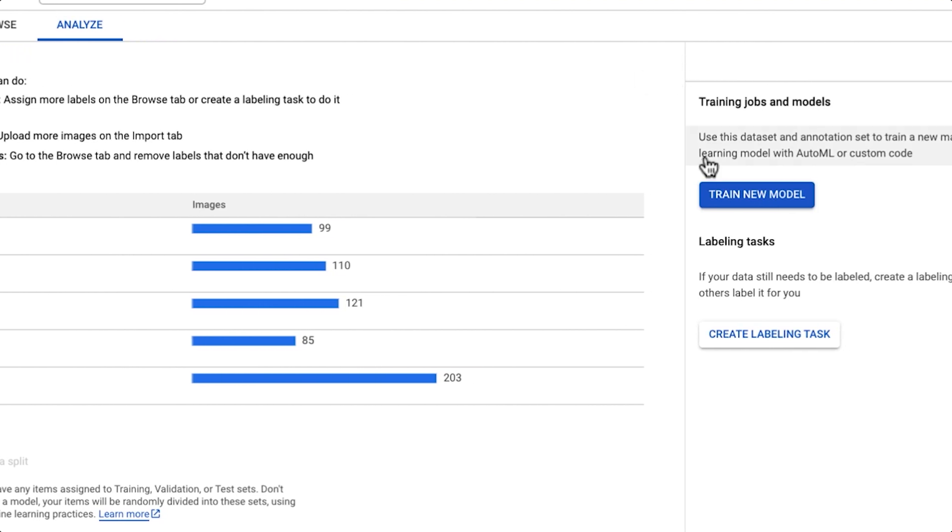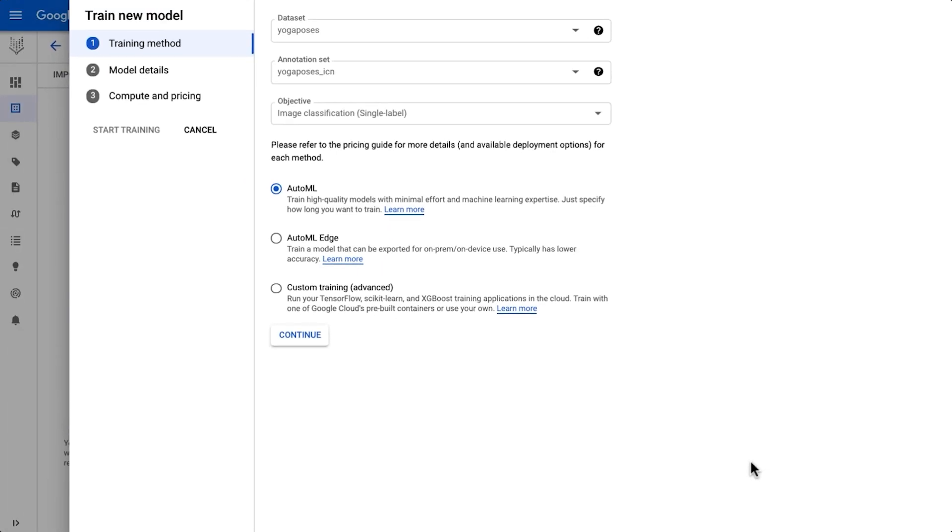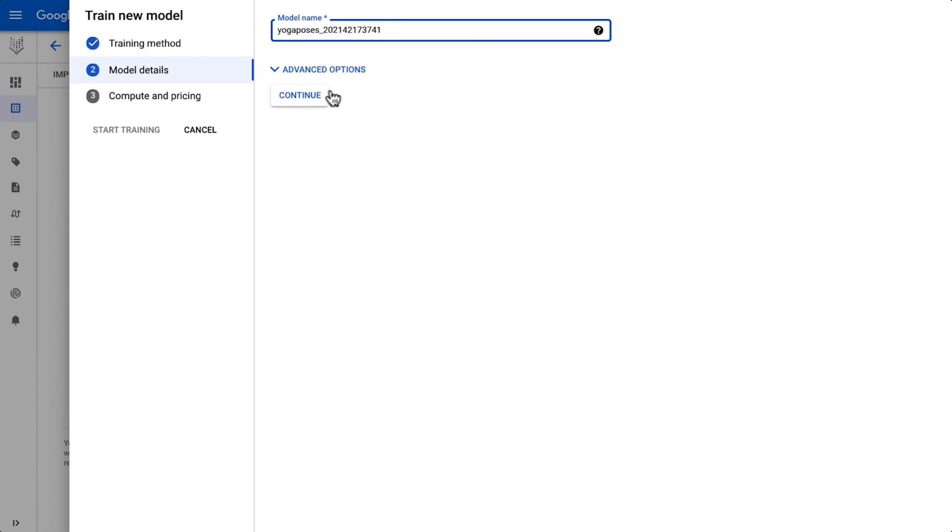Now we are ready to train our model. In here, I'm selecting AutoML for training method. You can also train a model to deploy on the edge or on-premise, or use custom training if you're writing your own custom model code.